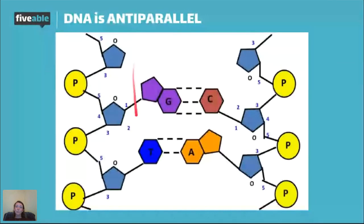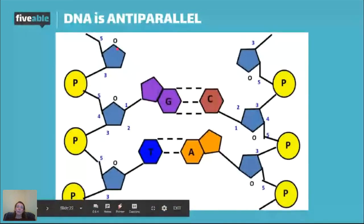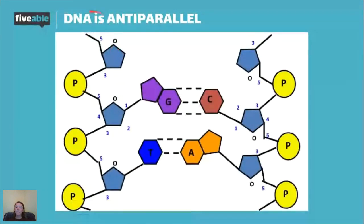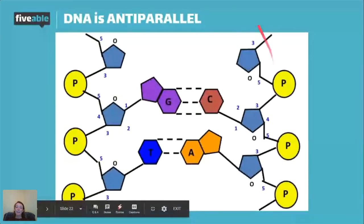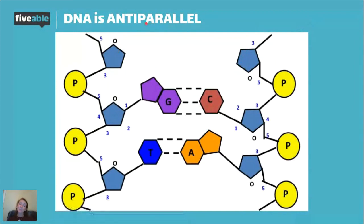When two strands come together, they're antiparallel — the 5' end of one strand is at the top while the 5' end of the other is at the bottom. That comes into play a lot with DNA replication. I've seen tricky multiple choice questions that require you to think about direction — it's not overly complicated but something to keep in the back of your mind.